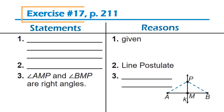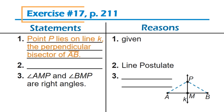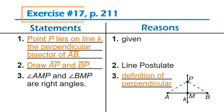Let's look at the first three statements and reasons. The first statement, as always, is the given. The second reason, combined with the diagram, should tip you off about the second statement — what was added to the original figure. It appears segments AP and BP were drawn, so that provides our second statement. The third statement is that angles AMP and BMP are right angles. Notice the given that line K is the perpendicular bisector of segment AB; therefore the reason here is definition of perpendicular.